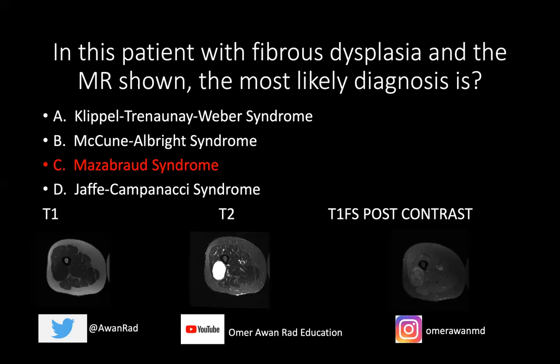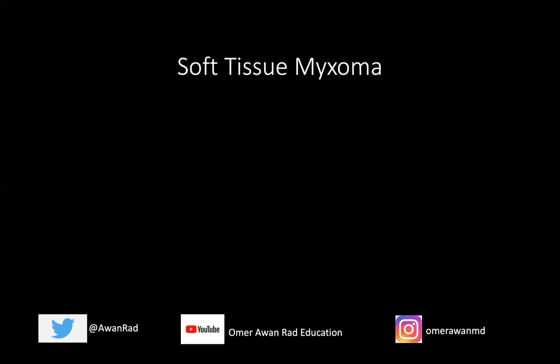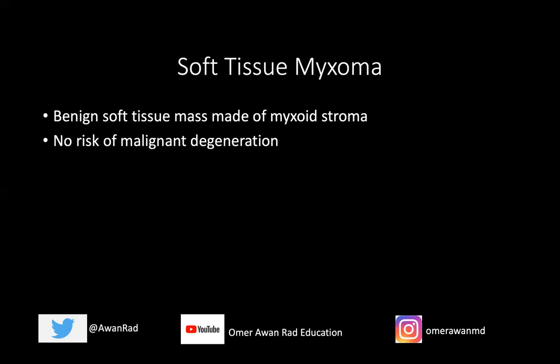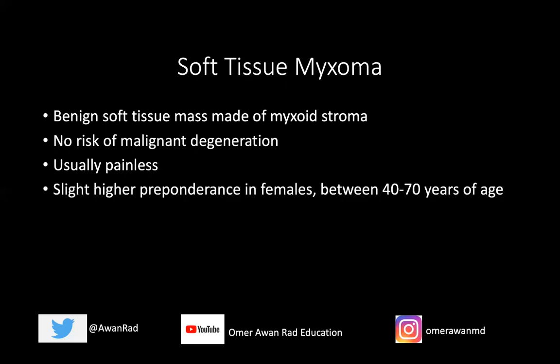This is a nice example of Mazabraud syndrome. The soft tissue myxoma is a benign soft tissue mass made up of myxoid stroma — that's why on T2 it's extremely bright and almost looks cystic. There's no risk of malignant degeneration; it's a benign lesion. They rarely recur after excision, and they're usually nearly painless, typically seen within muscle. There's a slightly higher preponderance in females, particularly between ages 40 and 70.